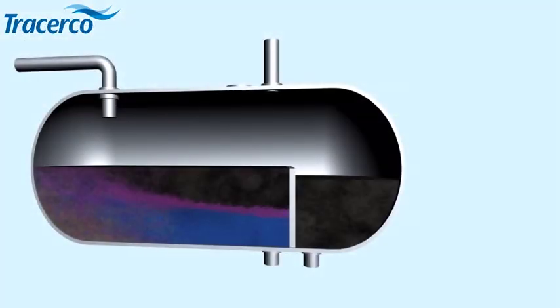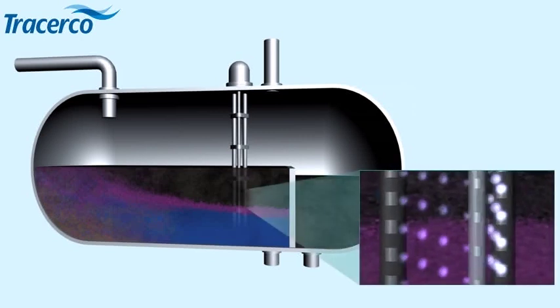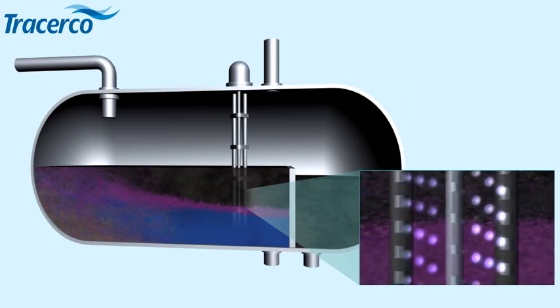The Tracerco profiler is inserted through a single nozzle. It can be inserted from any nozzle at any orientation. It consists of two or three dip pipes protruding into the vessel. A narrow dip pipe holds a vertical array of low-energy gamma sources. The other dip pipes hold a corresponding array of gamma detectors. The sources and detectors are placed into the profiler from outside the vessel and are easily retrievable if required.